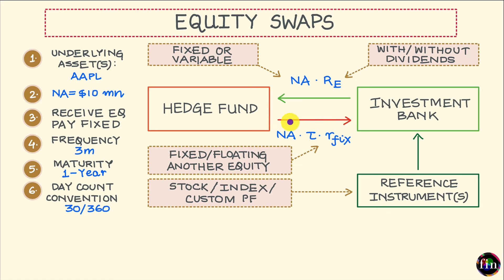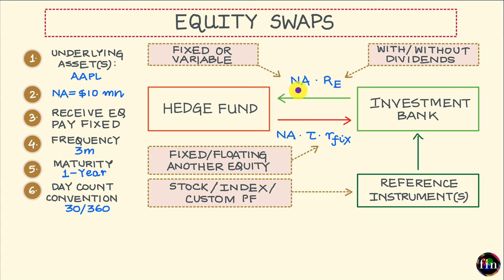With respect to the cash flow which the hedge fund was periodically paying to the investment bank — in this example it was calculated using a fixed rate of interest — in other variations of equity swaps this cash flow could have been calculated using a floating rate of interest, for example LIBOR or any of the replacement rates for LIBOR. This cash flow could also have been calculated using the performance of another equity, meaning an equity swap can very well be a swap which exchanges the performance of two different equities.